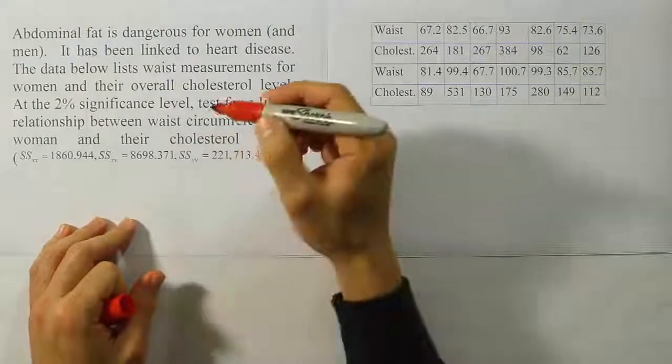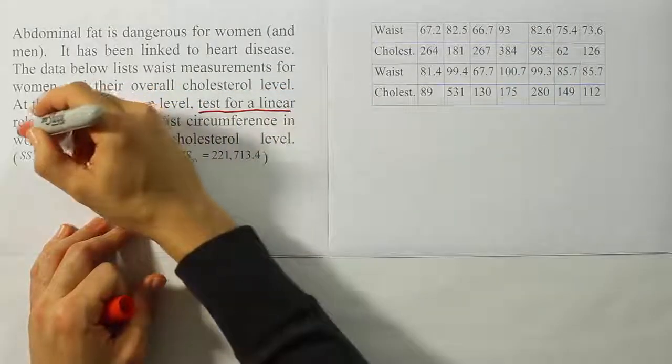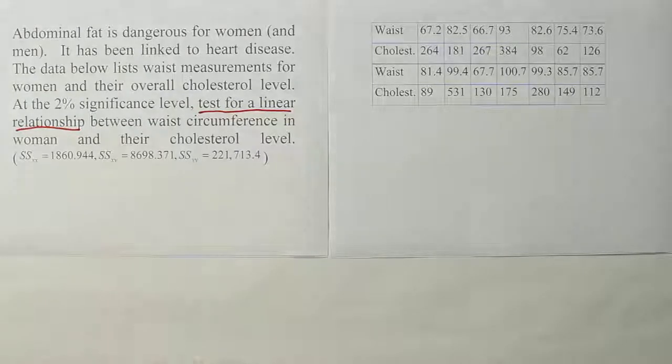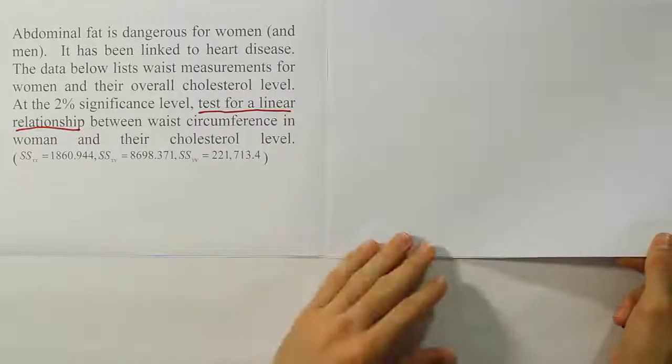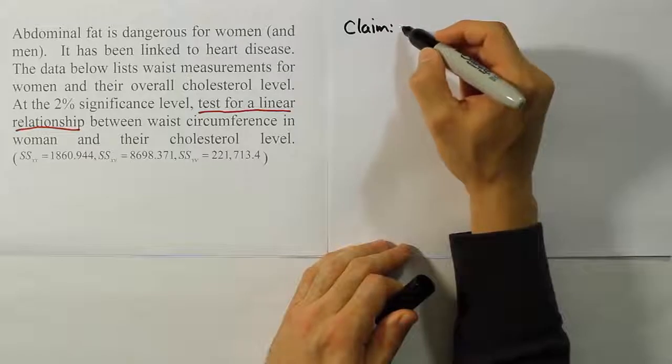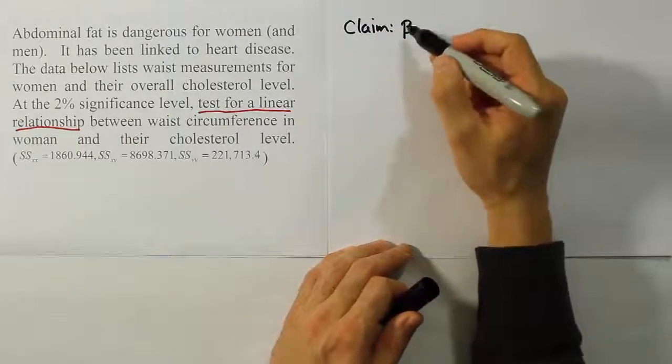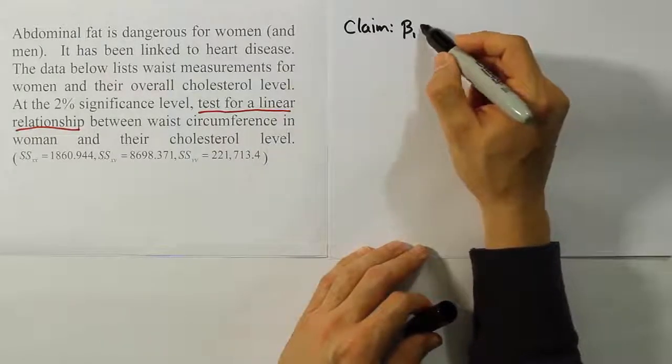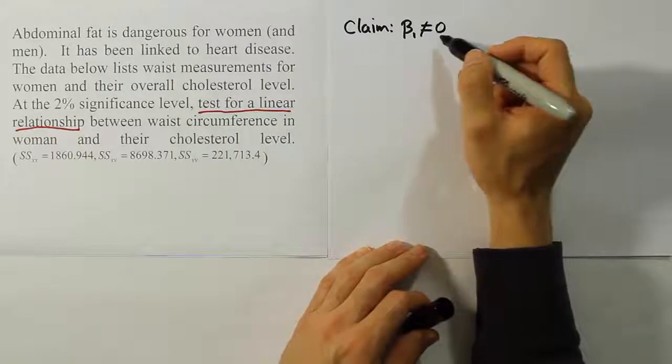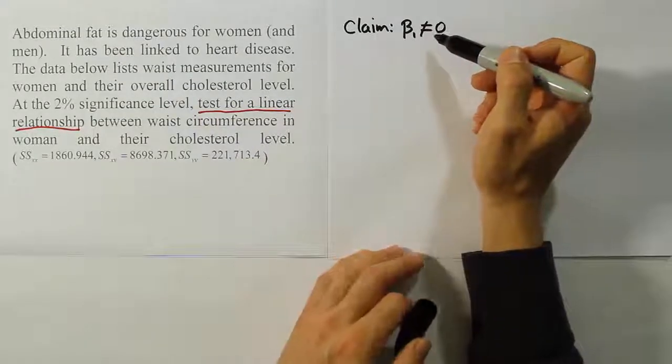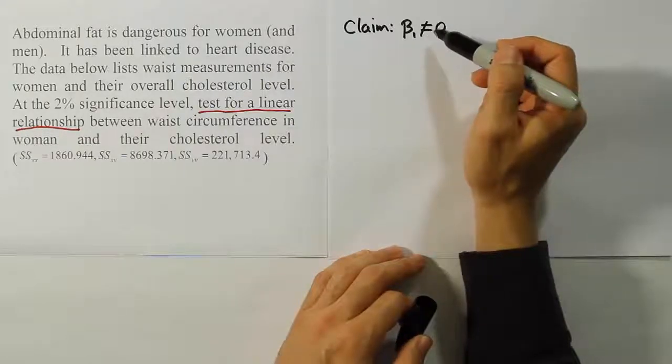Let's pay attention to what they're asking us to do. They say they want us to test for a linear relationship. Just a linear relationship. They don't specify what kind of a linear relationship. So the claim for our test is that beta 1 is not equal to 0. Just to say there is a linear relationship says that it's not equal to 0. It doesn't imply whether it's positive or negative here.